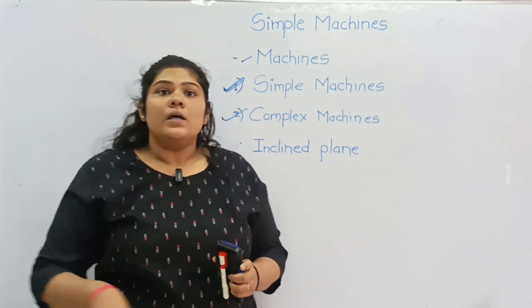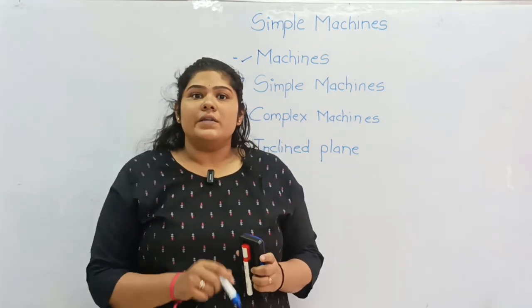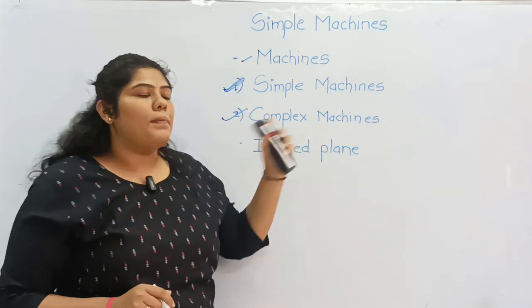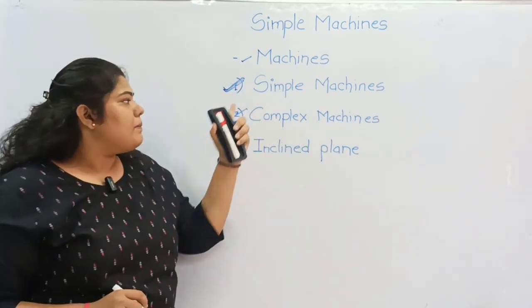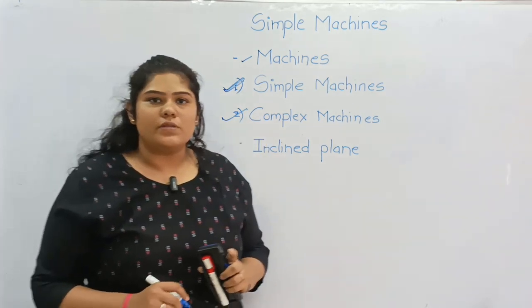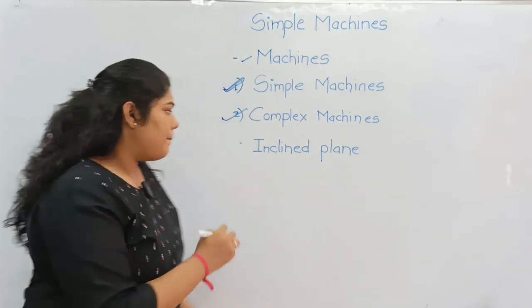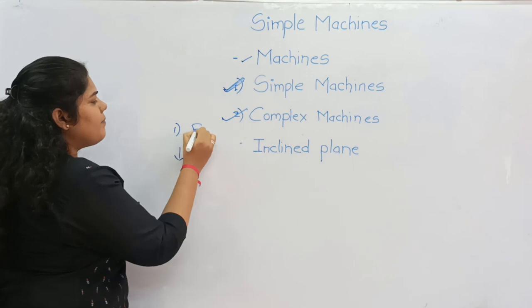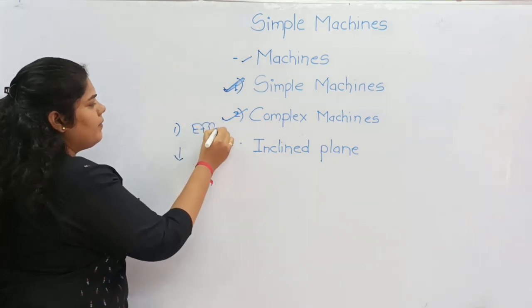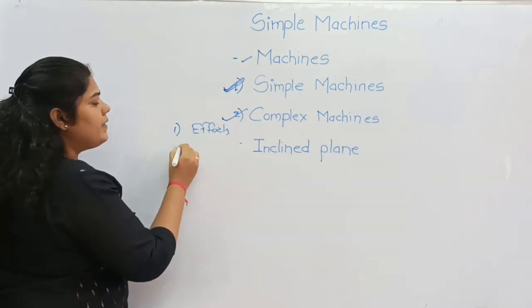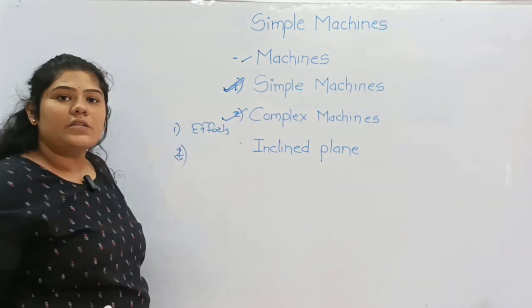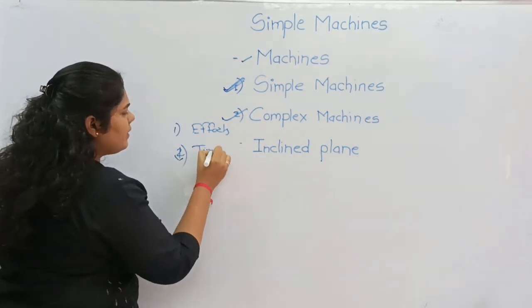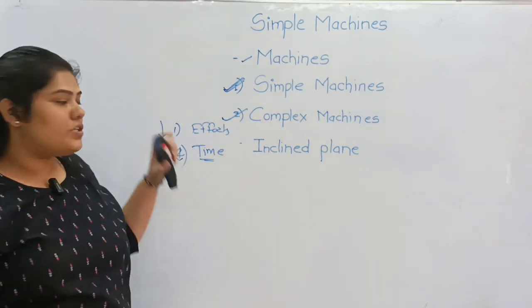We can use both simple machines and complex machines. We use efforts with simple machines, and with complex machines we use them as needed. Both types of machines can be used.